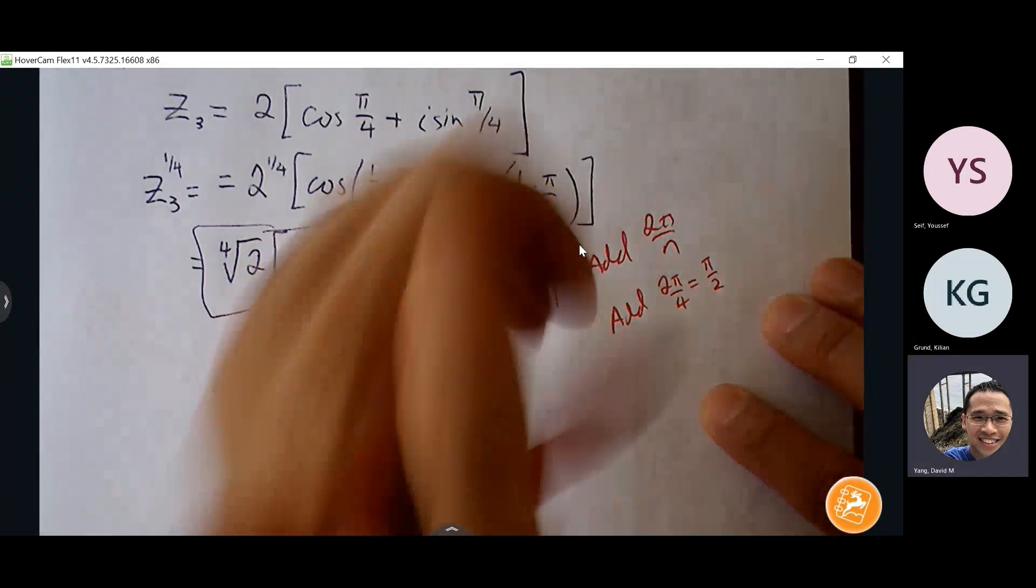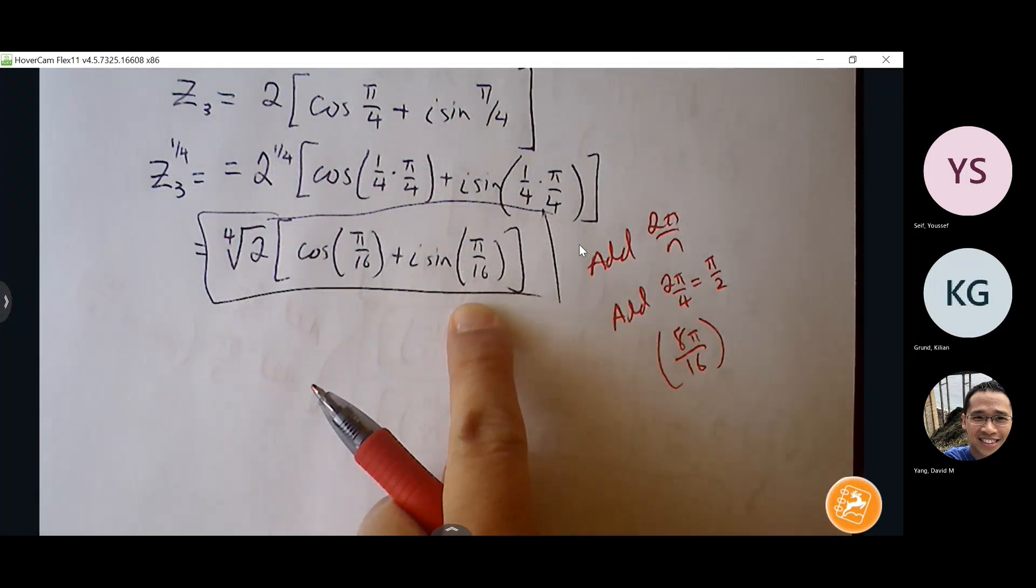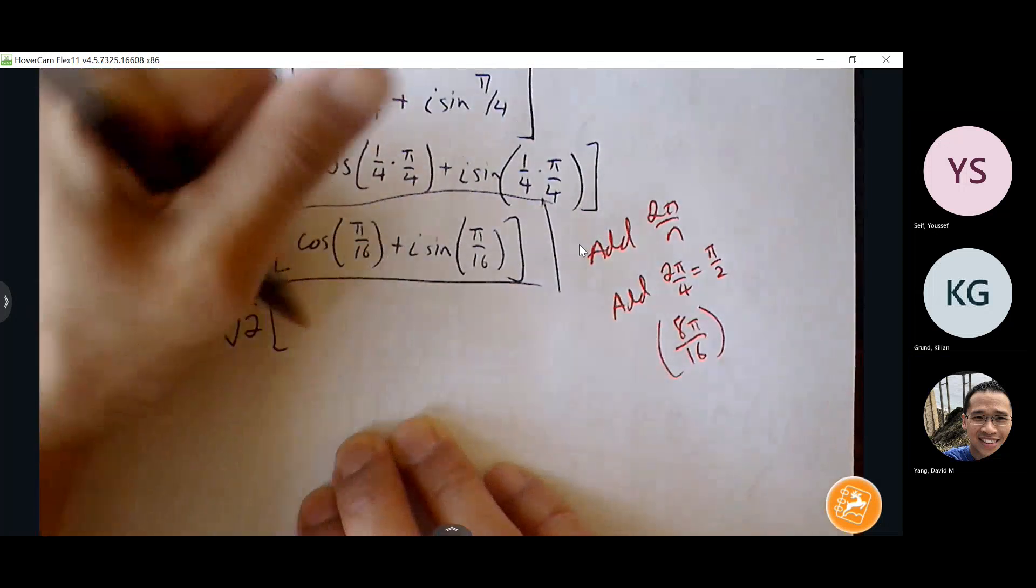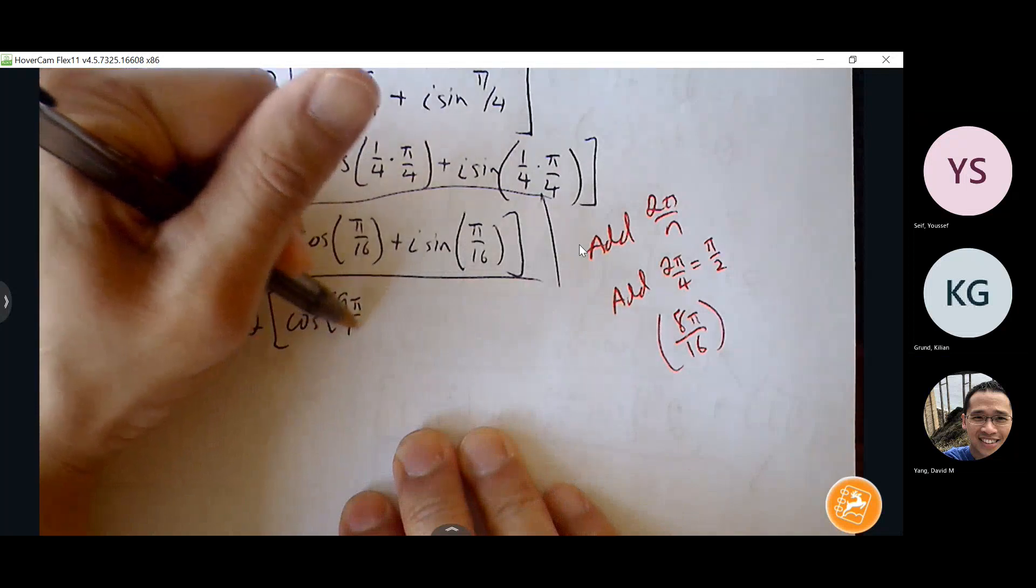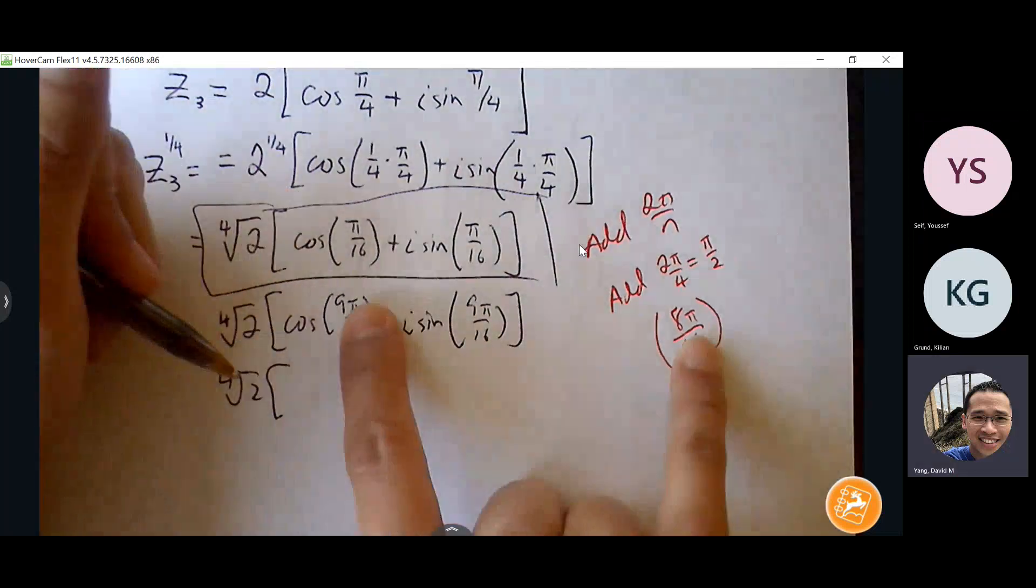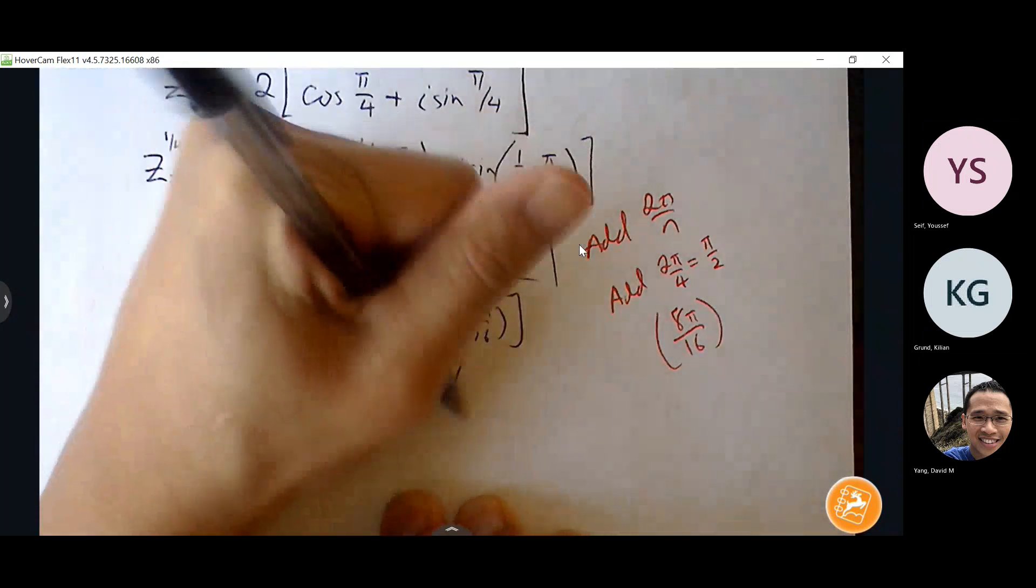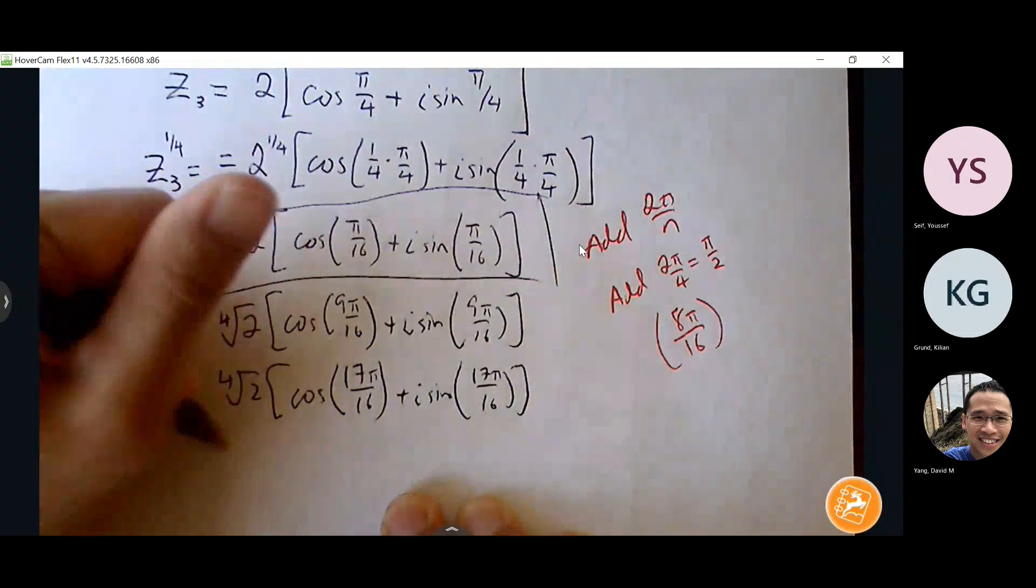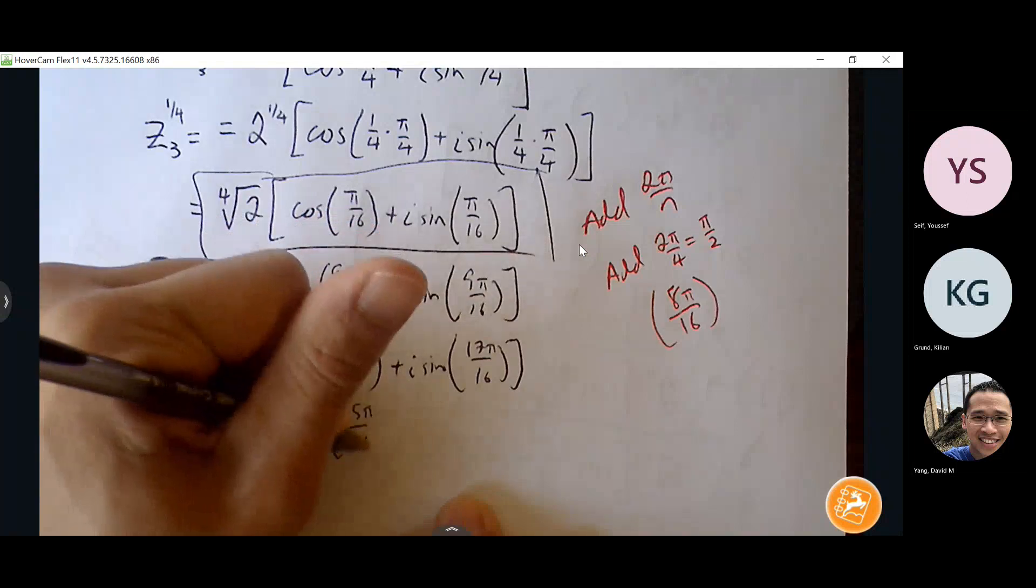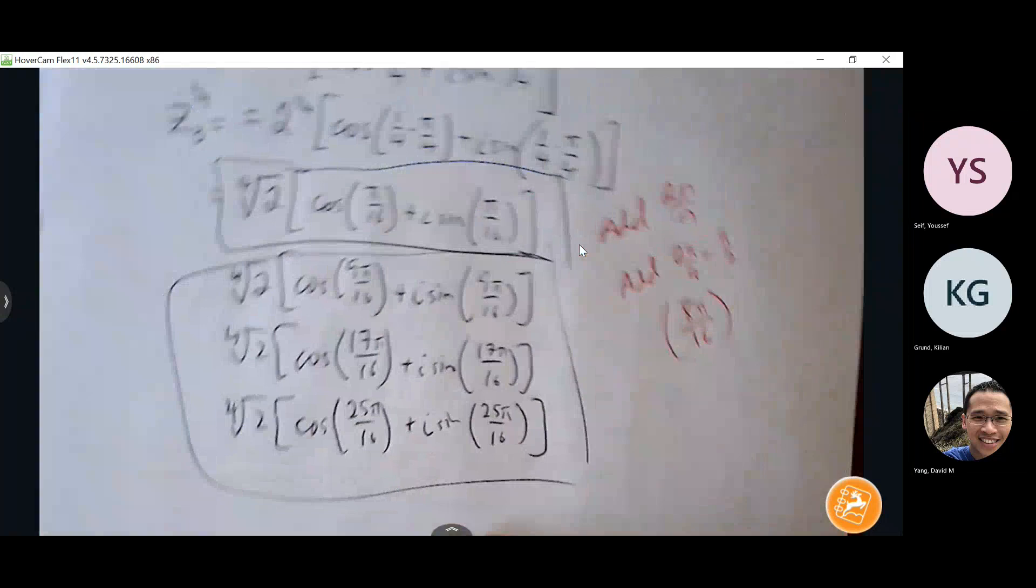And if I want to match common denominators there, it's the same thing as 8 pi over 16. Alright, so I'm going to keep adding 8 pi over 16 until I get to four solutions. So 1 plus 8 is 9. 9 plus 8 is 17. And then 17 plus 8 is 25. Okay, so there we have it, four solutions.